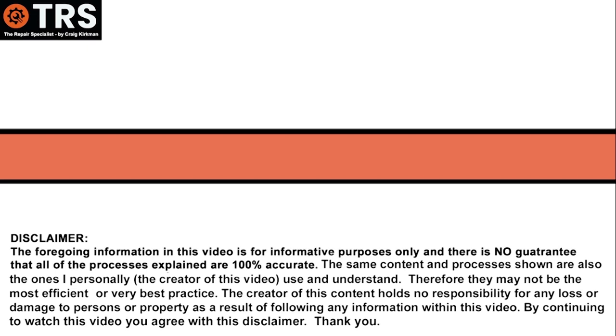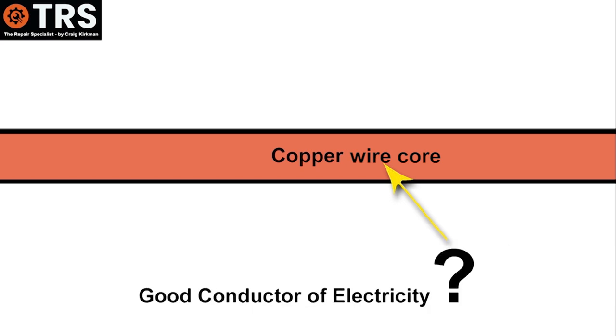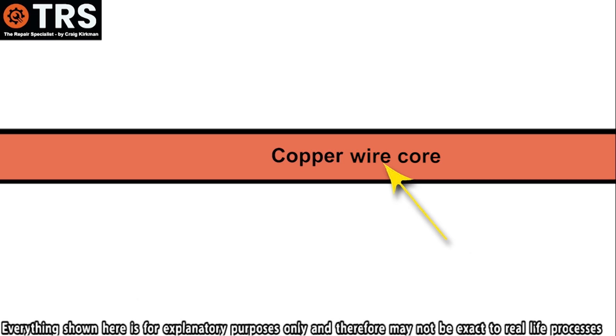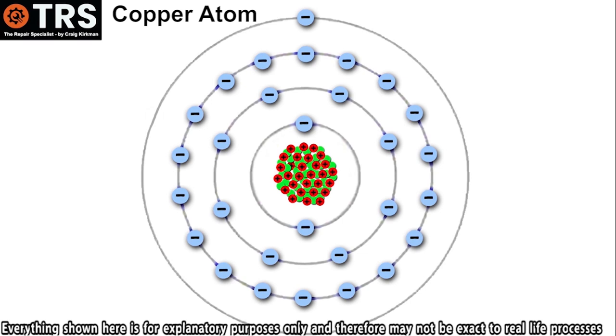So it may come as no surprise that the conductive core of the wire is usually made of copper because copper is a very good conductor of electricity. And what do I mean by a good conductor? Well to answer that we'll have to take a look at the smallest part of the copper, the copper atom. And basically it's the structure of the copper atom that makes copper so conductive.